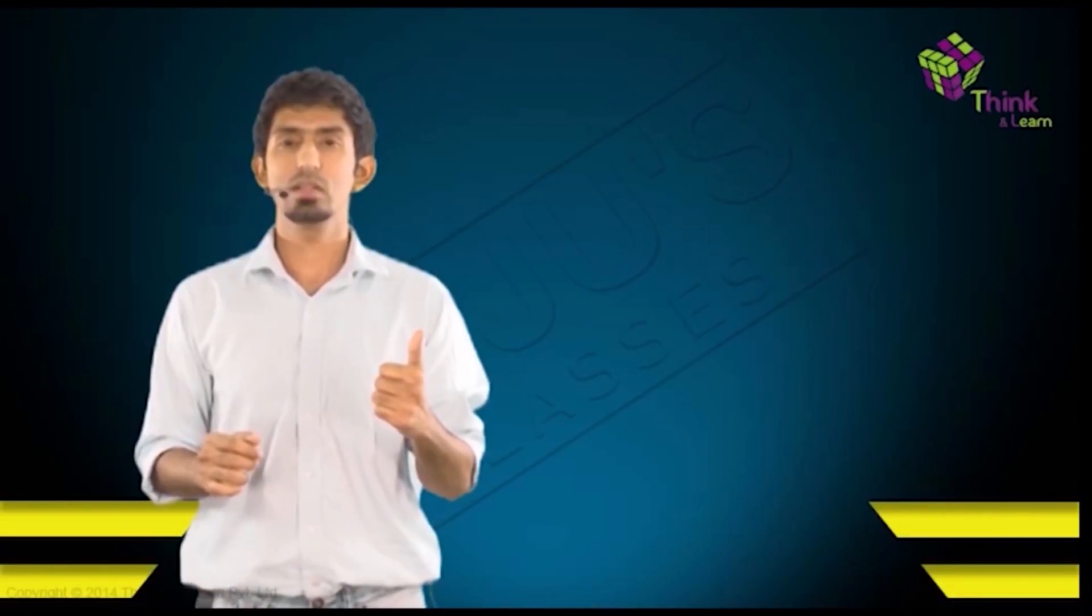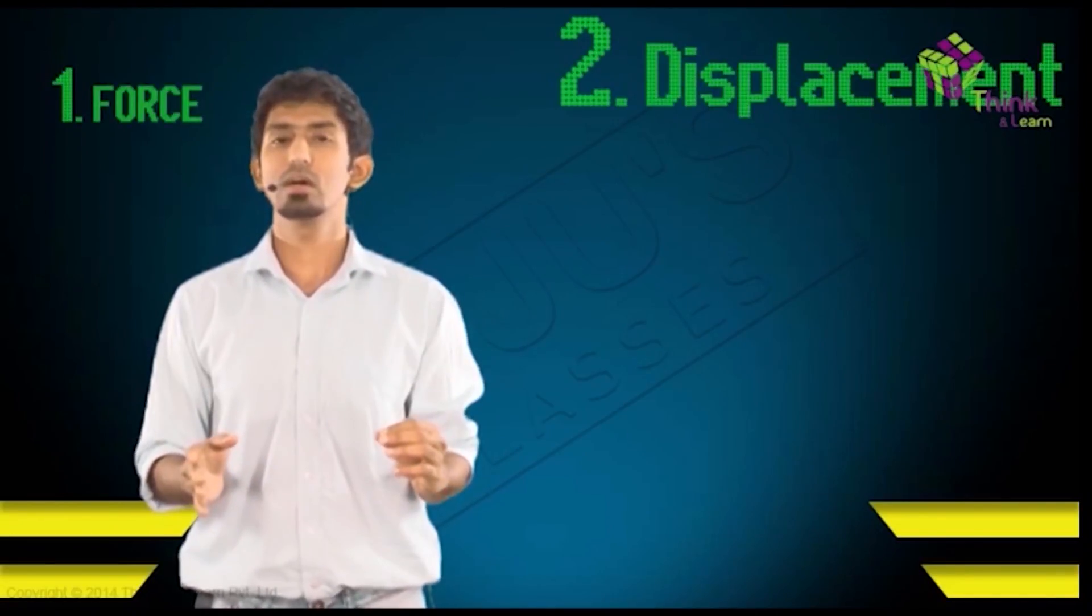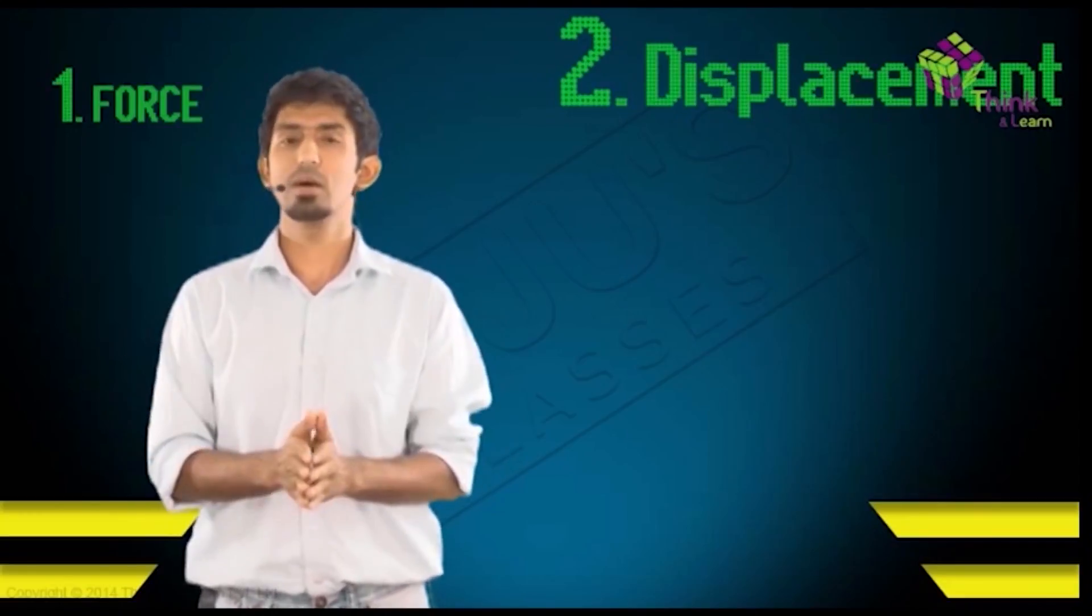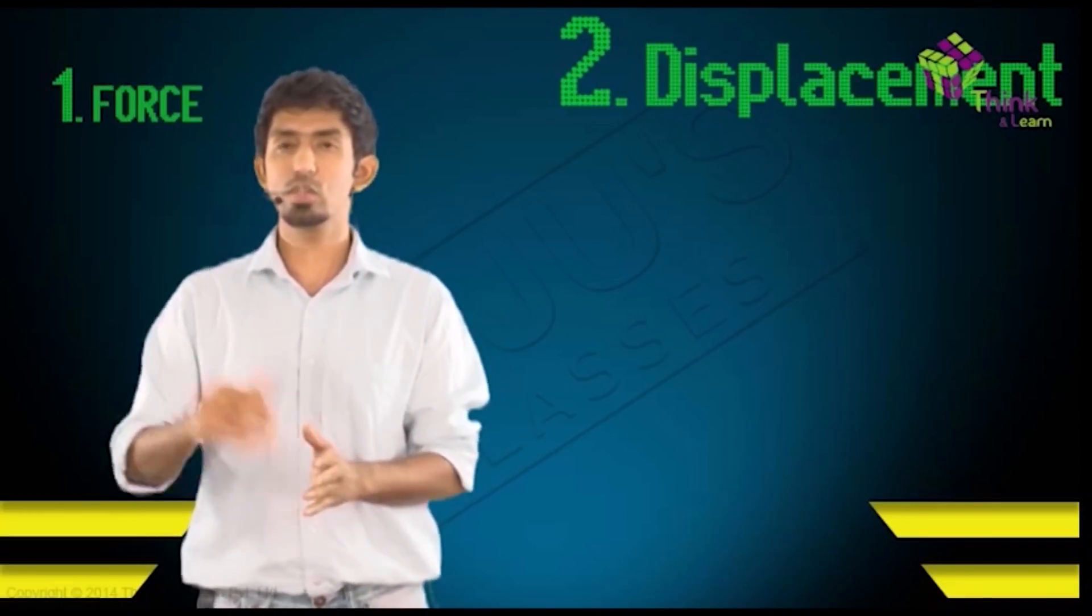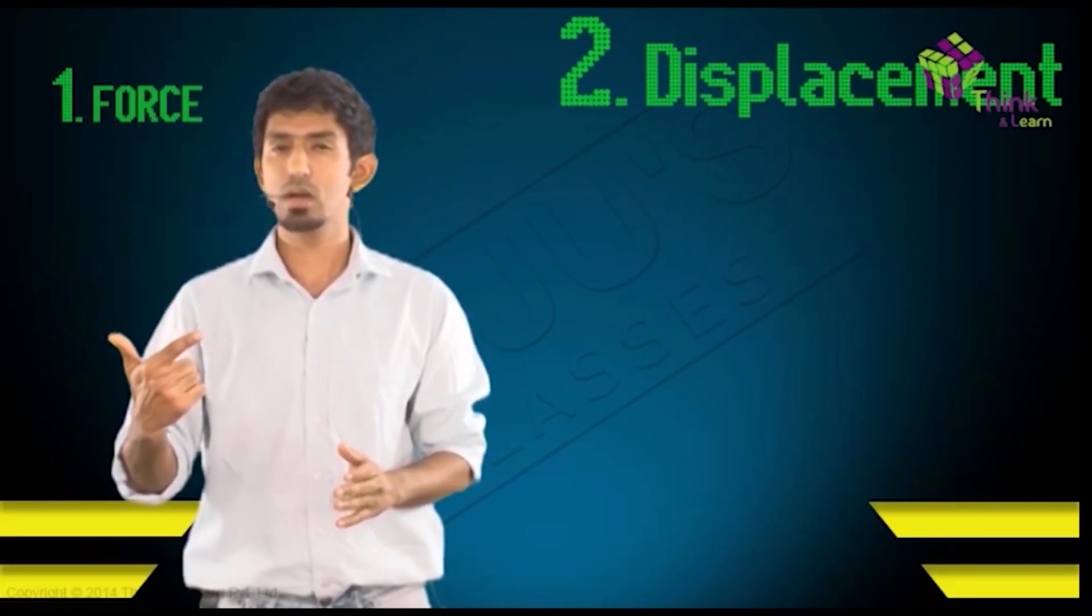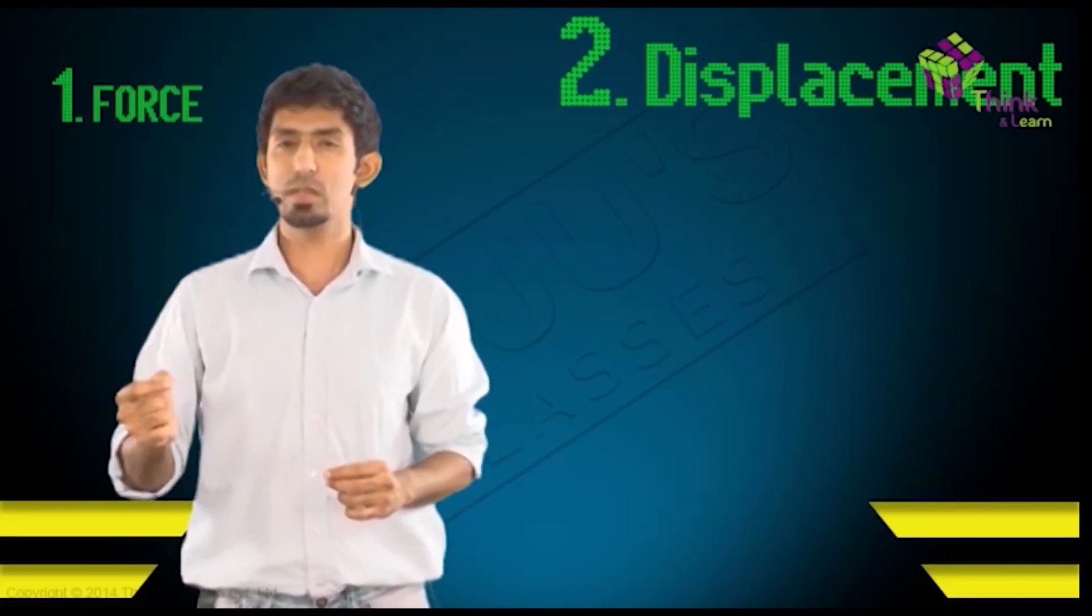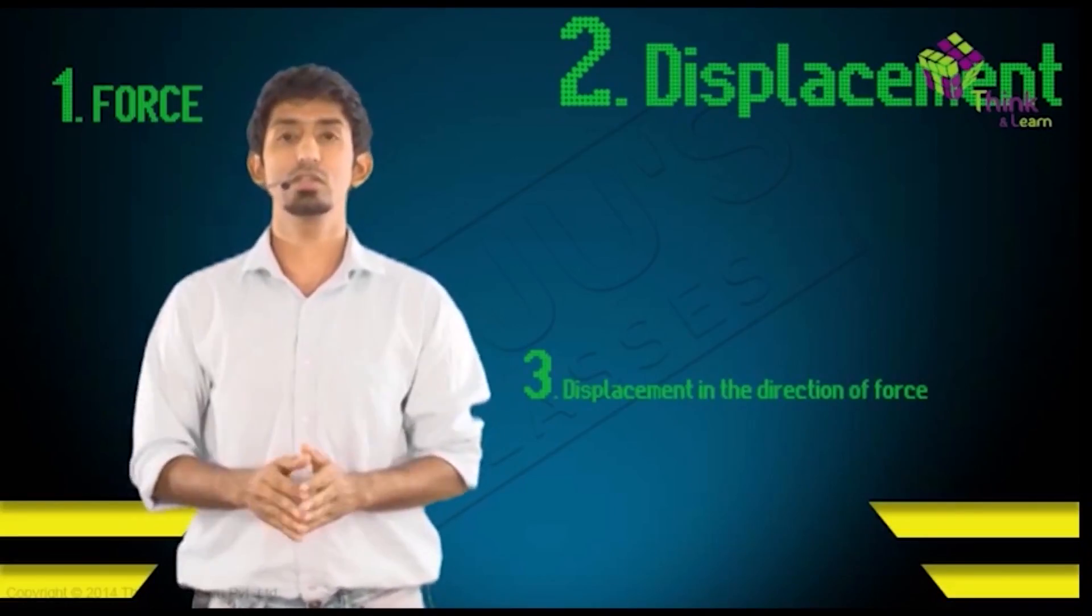Let's try and answer what is work. You need to have a force. The first requirement for work to be done is a force. The second thing, of course, is a displacement. And there, your textbook ends. But we're going to add a little piece to it. So you need a force, you need a displacement, and also you need that displacement to be in the direction of the force that you apply.